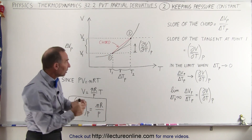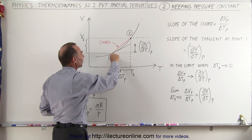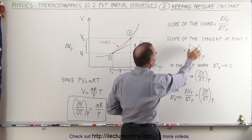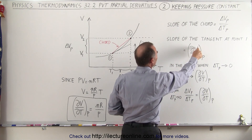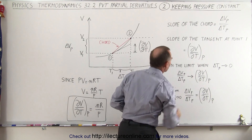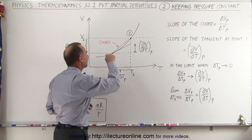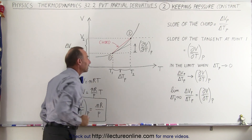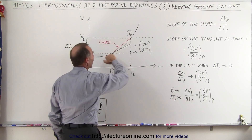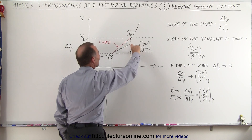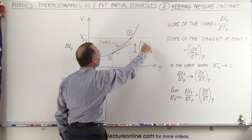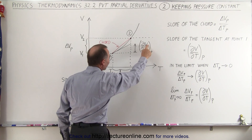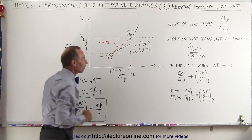If we pick a tangent line right at state 1 and express the slope of that tangent line, we can see that it would be expressed in terms of the partial derivative — the change in volume with respect to temperature keeping the pressure constant. In other words, it's the slope right at that state. If we project that tangent line out between T1 and T2, this represents the change in volume as a function of temperature keeping the pressure constant.